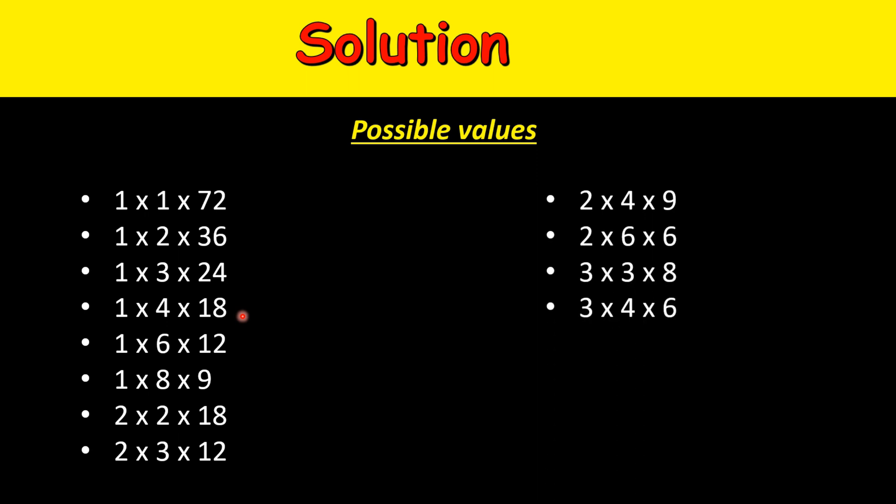Now the second hint was that the sum of their ages is equal to their house number. So let's write the sum of their ages. You add 1 plus 1 plus 72, you get 74. Similarly, 36 plus 2 plus 1 is 39.